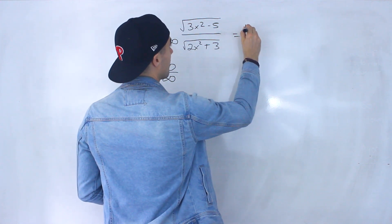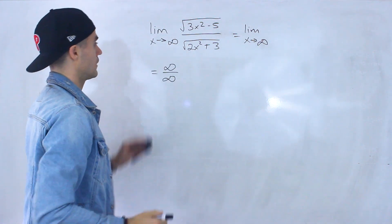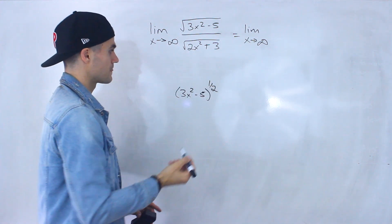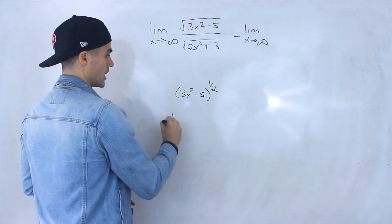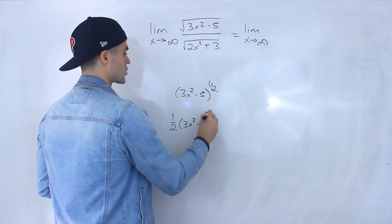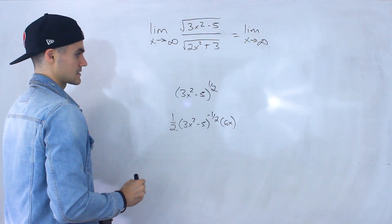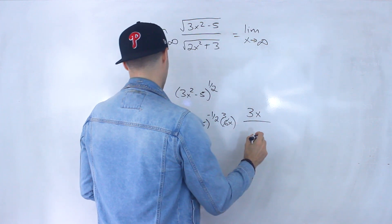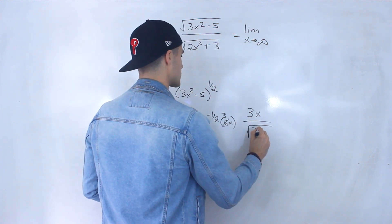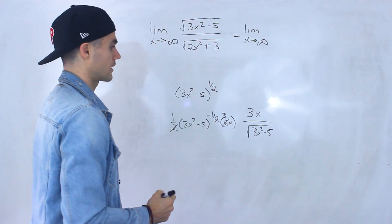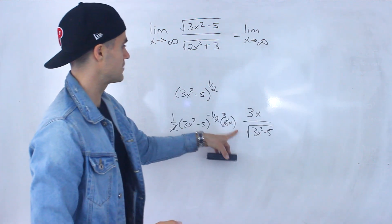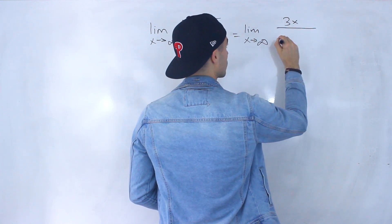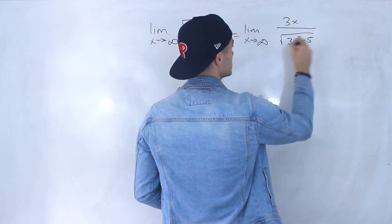Let's apply L'Hôpital's rule. We take the derivative of the numerator. For 3x squared minus 5 to the power of one half, we use the chain rule: bring the one half down, subtract 1 from the exponent, then multiply by 6x. The 2 and the 6x cancel out, so this ends up being 3x over the square root of 3x squared minus 5. That's the derivative of the numerator.